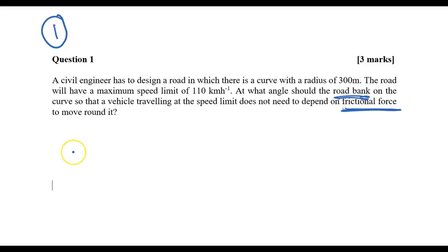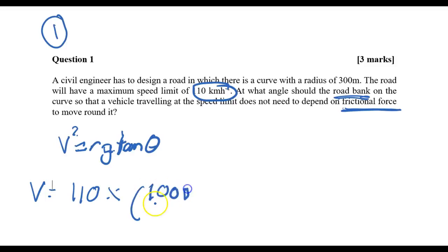In this case we can safely use this formula: v² = rg tan θ. The formula is safe to use, but the first thing you have to realize is the speed here is given in non-SI units, so let's change it. To convert 110 km/h, you have to times 1000 divided by 3600. You have 30.6 meters per second.